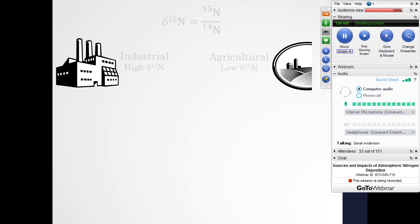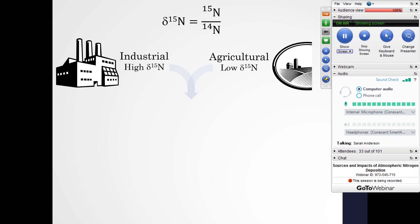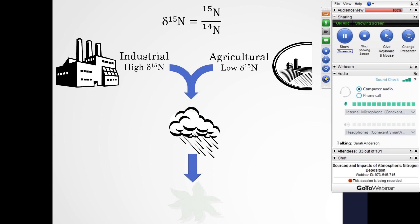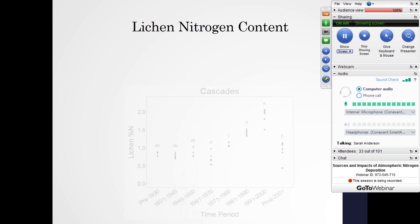We also analyzed the stable isotope composition of those lichens, which tells us about the emission sources contributing to nitrogen deposition at that location and time. Nitrogen comes predominantly from two different sources: industrial sources with very high isotope values, and agricultural emission sources with very low stable isotope values. These stable isotope values are really just a ratio of the heavier isotope versus the lighter isotope. As all these emission sources emit nitrogen into the atmosphere, it mixes around, comes back down as deposition, and lands on our lichen where it's absorbed into those lichen tissues — giving us a snapshot of the deposition that occurred at that time.